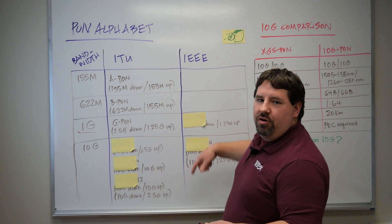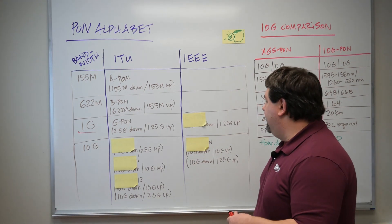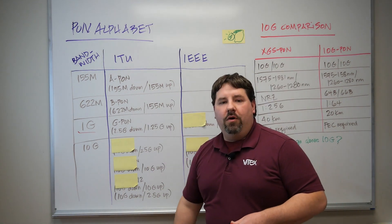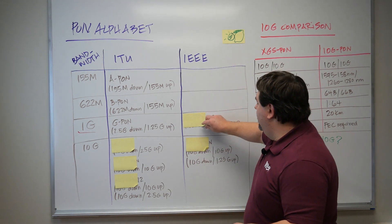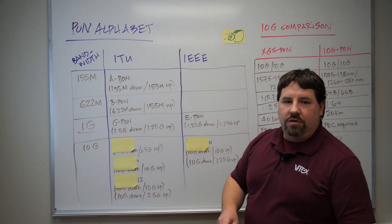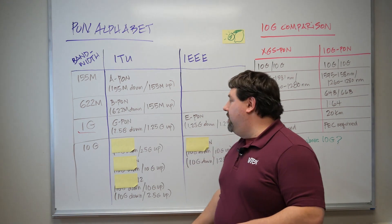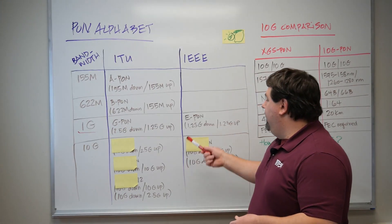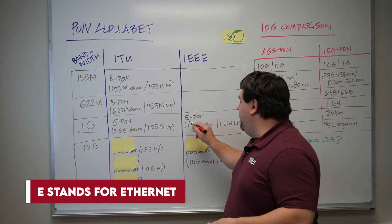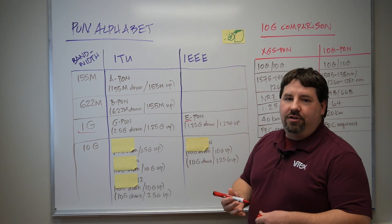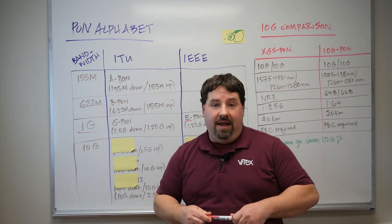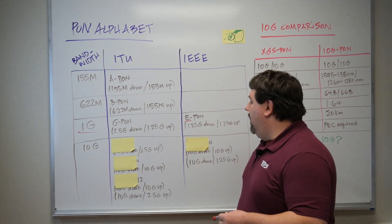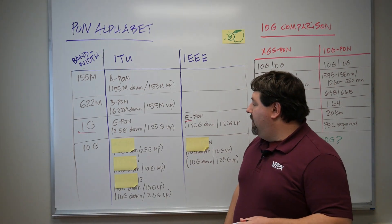At the same time, the IEEE was getting in the mix. They said, 'Okay, what kind of speeds can we offer at around the same rate?' And here comes our next letter, which makes sense in sequential order: E-PON. The E stands for Ethernet, and we all know IEEE from a lot of Ethernet standards, so it makes sense that they're focusing on an Ethernet type of frame and protocol.